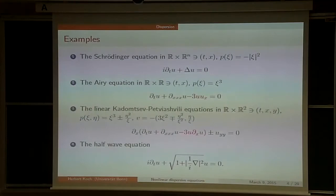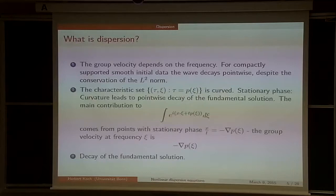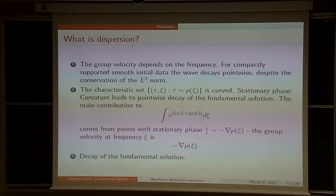What is dispersion? From physics, it's not a perfectly rigorous notion but it's quite good. It says that the group velocity — the velocity of a wave with a certain frequency — depends on that frequency. This has the effect that if you have compactly supported initial data whose Fourier transform is a Schwartz function, it has different components, each with a different velocity, so they move apart and decay.